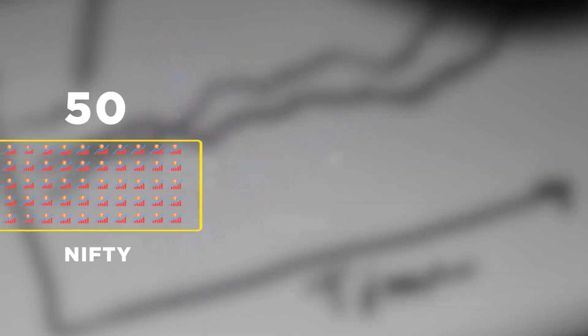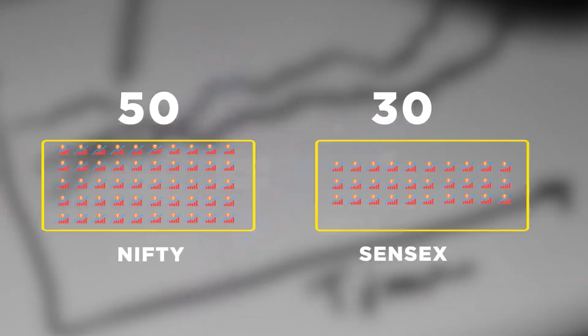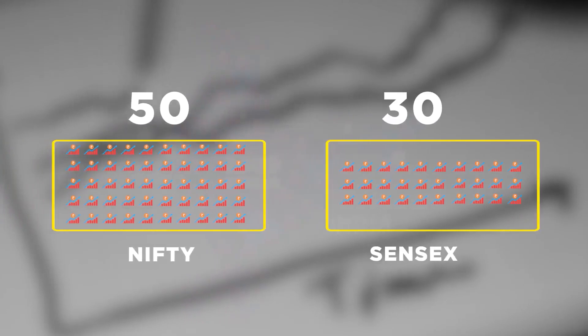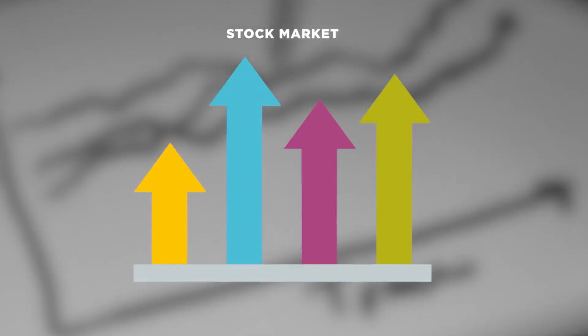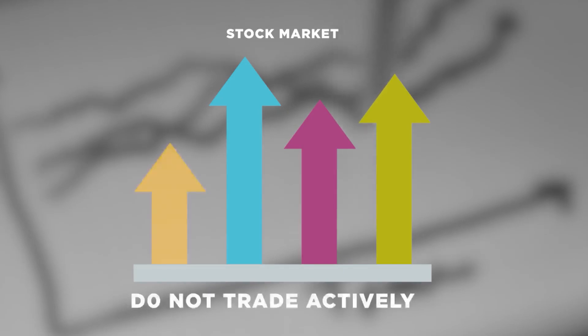There are 5,000 stocks in India, but only 50 appear in the NIFTY index and 30 in the SENSEX, which is the other widely followed index in India. There is considerable overlap between the NIFTY and the SENSEX. The reason why we don't include so many of the other listed firms is that those stocks are sometimes small and very often don't trade actively for days, sometimes even weeks. We don't expect them to reasonably capture or meaningfully reflect economic activity in the country.